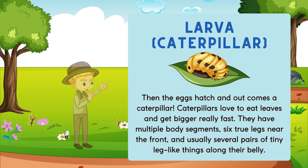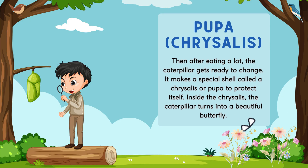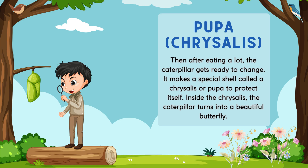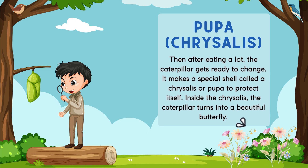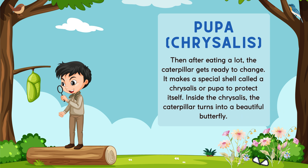Stage number three is known as pupa or chrysalis. After eating a lot, the caterpillar is ready to change. It makes a special shell called a chrysalis, or pupa, to protect itself. Inside the chrysalis, the caterpillar turns into a beautiful butterfly.